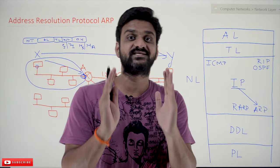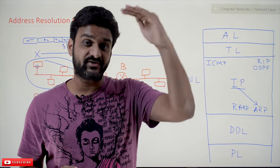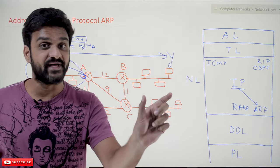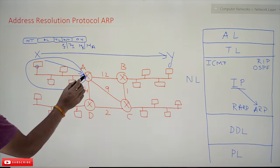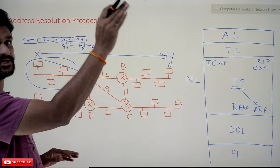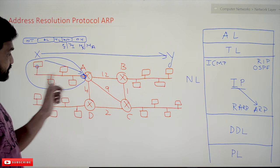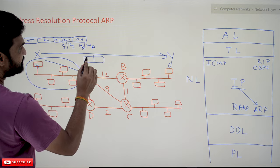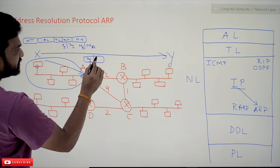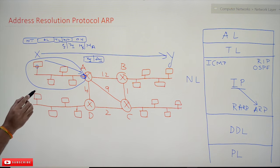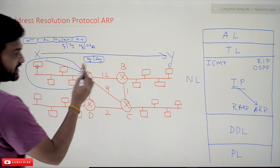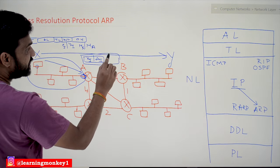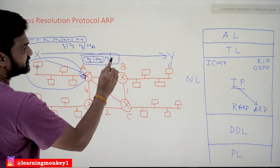In the X system, we have the default router IP address. If you go to your network settings you will find the default router IP address option there. Since both X and Y are not in the same network, it has to go to the default router, which is A. ARP will send a request packet: 'I have IP address X, I want the MAC address of A. I have the MAC address of X, and I want the MAC address of A.'